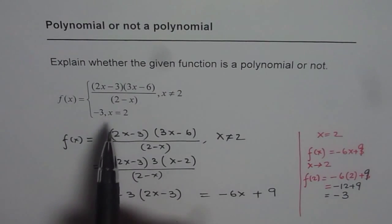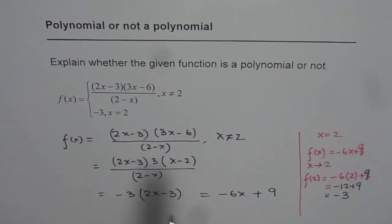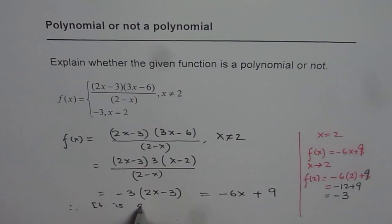That means the function is continuous. So this function approaches minus 3 and so it is a straight line which is continuous. And therefore we say this is a polynomial. So therefore we conclude that it is a polynomial.